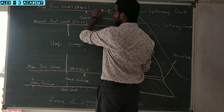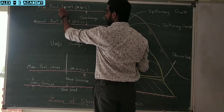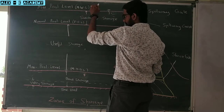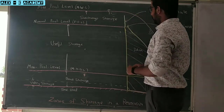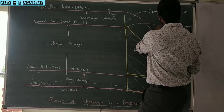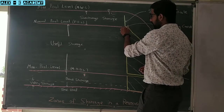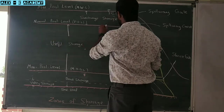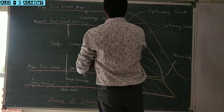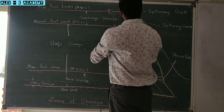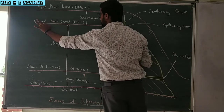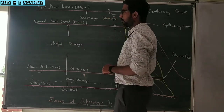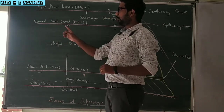That is the maximum pool level. The dam is at the top level of water level. The dam is at the middle level of water level. This is the normal pool level — also called the full reservoir level.